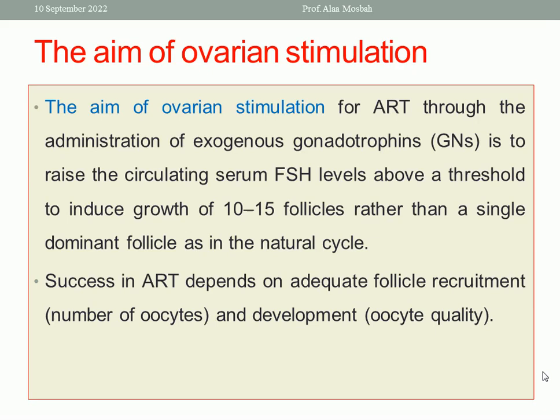The aim of ovarian stimulation for ART through administration of exogenous gonadotropins is to raise the circulating serum FSH level above the threshold to induce the growth of 10 to 15 follicles, rather than a single dominant follicle as in a natural cycle. Success in ART depends on adequate follicle recruitment—the number of oocytes—and development—the quality of oocytes. These are the two important factors for successful ART.